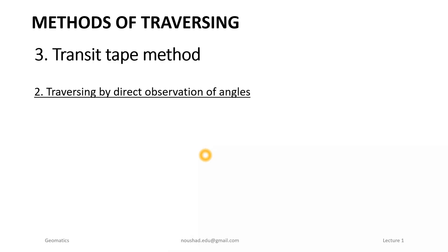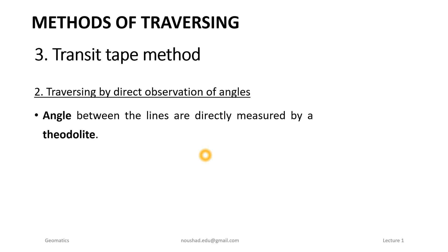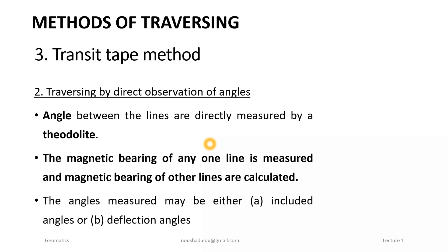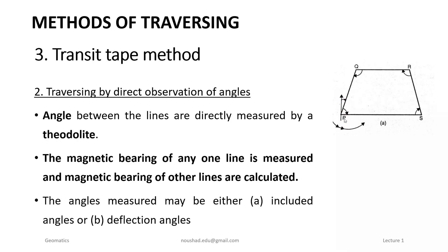The second sub-method in the transit tape method is traversing by direct observation of angles. In this case, the angles between the lines are observed and measured directly using a theodolite, and the magnetic bearing of one line is measured. The magnetic bearing of other lines are then calculated. This method includes both included angle measurement and deflection angle measurement.